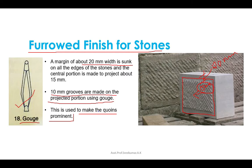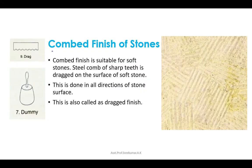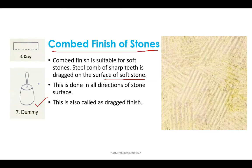The combed finish is used only in soft stones. The surface is first brought to the required level by means of a dummy and a soft stone chisel. Then steel plate drags of different sizes are dragged backward and forward in different directions until the tool marks are eliminated. A combed finish is obtained, which is otherwise also called dragged finish.